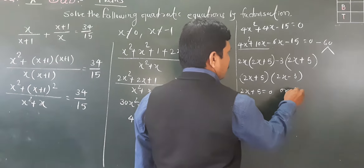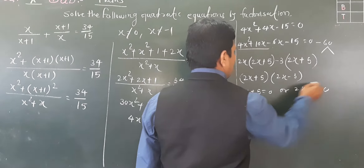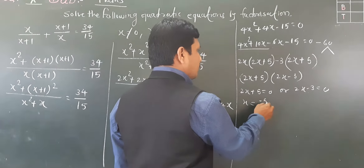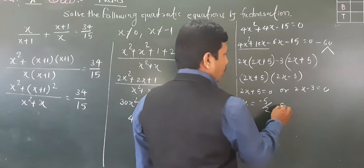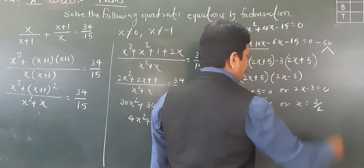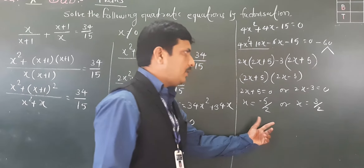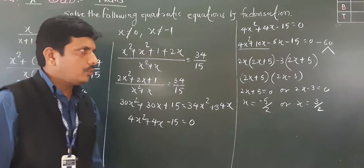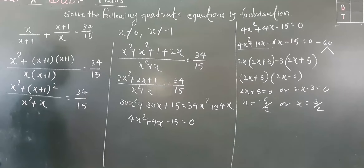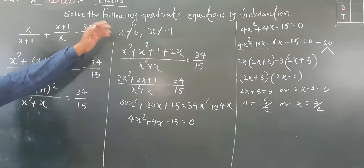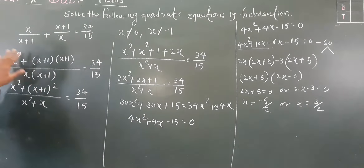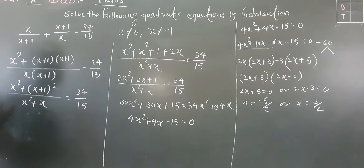So the factored form is (2x + 5)(2x − 3) = 0. Therefore 2x + 5 = 0 gives x = −5/2, or 2x − 3 = 0 gives x = 3/2. So our two solutions are x = −5/2 and x = 3/2. This is the quadratic equation solved by factorization.